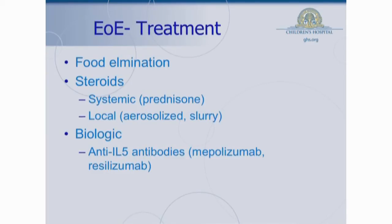The newest and maybe most exciting aspect of treatment are what's called the biologic therapies. Biologic therapies basically pinpoint a part of the immune system and try to modify it, and one of the ways they do that is with an antibody. They've created an antibody against something called interleukin-5, or IL-5, which is an important messenger that cells in the body use to recruit other eosinophils and tell them to get active in the area. If you use an antibody to bind up that IL-5, you can theoretically reduce the inflammation and the number of eosinophils recruited into the tissue.